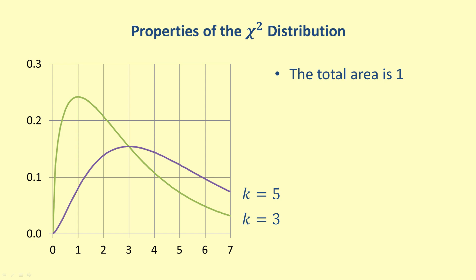The peak of each distribution, or the mode, is located at k minus 2 for all distributions with k equals 3 or larger. This can be seen on the graph for the two curves shown. The peak for 3 degrees of freedom occurs at 1 and the peak for 5 degrees of freedom occurs at 3. The mean of each distribution is located at k. Since the distributions are all right tailed, the median is less than the mean. The median falls between the mode and the mean.